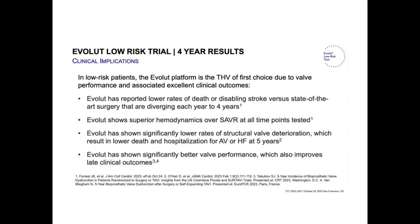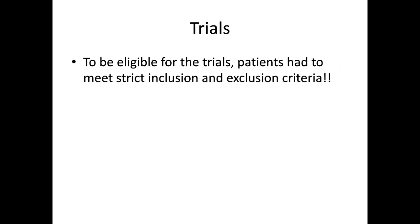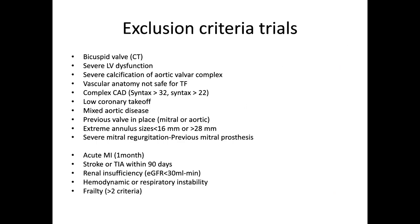Evoluted reports a lower rate of death or disabling stroke versus state-of-the-art surgery, with diverging curves, superior hemodynamics, and fairly low structural valve deterioration. In terms of trial eligibility, patients had to meet strict inclusion and exclusion criteria. A lot of patients we currently see in practice were excluded: bicuspid valve, severe LV dysfunction, severe calcification of the valve complex, complex CAD, low coronary takeoff, mixed aortic disease, and extreme annulus size. This data is an indicator, but should not be extrapolated to all patients — our judgment in consulting the patient is really the key.